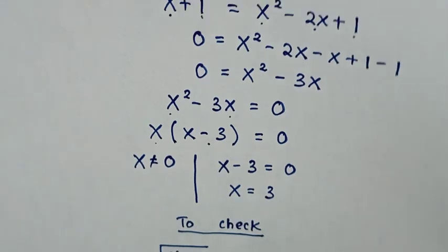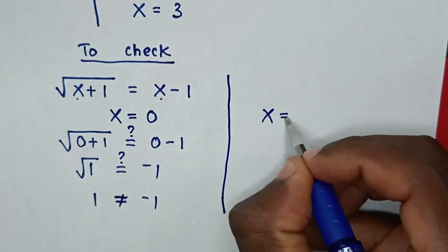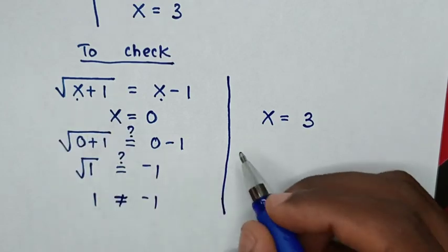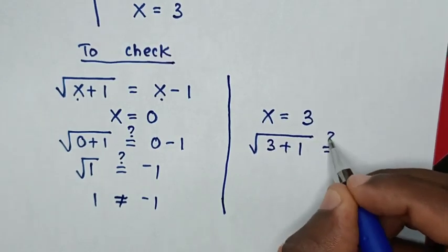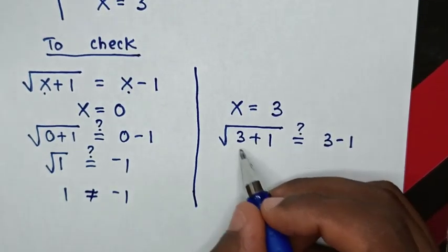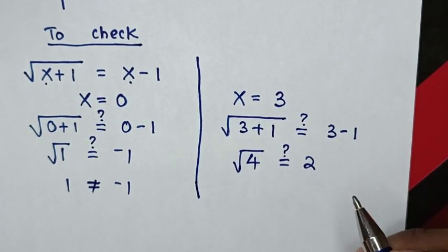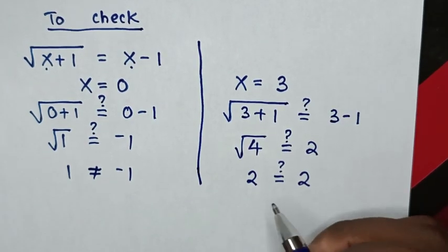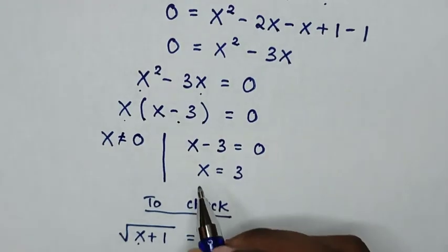Then to check if x equals 3, we substitute into the original problem. It will be square root of 3 plus 1 equals 3 minus 1. So 3 plus 1 is 4, and square root of 4 is 2, and 3 minus 1 is 2. So the left side equals the right side. Therefore x equals 3 is the correct answer.